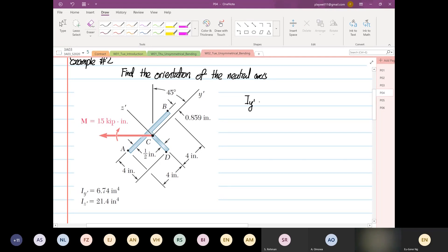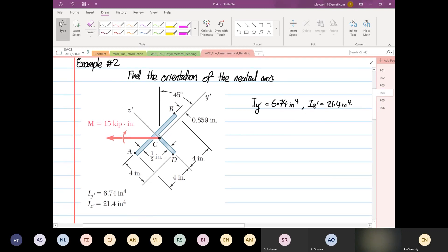Iy prime is equal to 6.74 inches to power 4. And Iz prime is equal to 21.4 inches to power 4. Now, you can see that the y prime and z prime is taken such that it's somehow parallel or perpendicular to the structure. Yes or no?